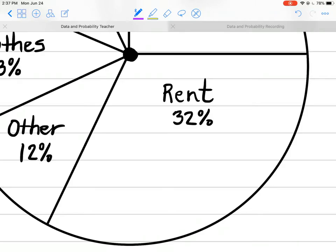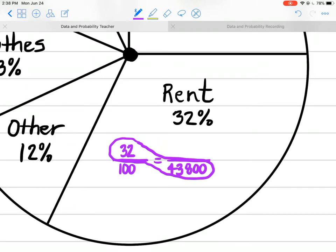Let's set up our proportion for percent. 32%, that's 32 hundredths. And remember my annual income is $43,800. This is not the nice neat problem we saw with the $10,000, so I encourage you to use your calculator. $43,800 times 32 divided by 100 is $14,016 for rent. And remember, this is for a year.